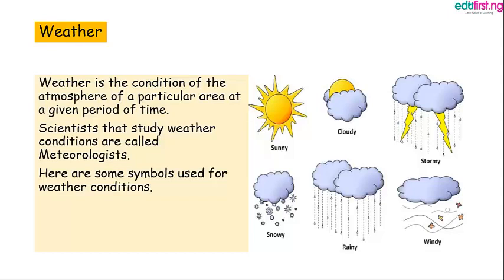For example, in your school, it may be raining in the morning. So, for that particular time — that period of time, which is the morning — and the area is your school, and the condition of the atmosphere is raining, so we can describe the weather condition of your school that particular morning as raining.